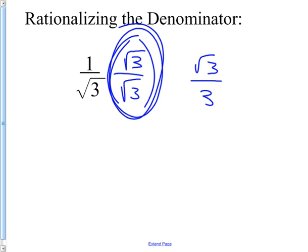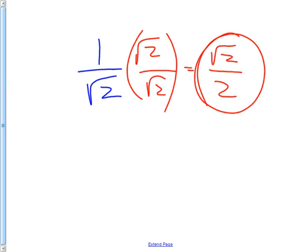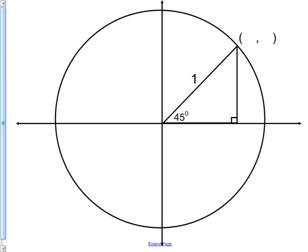I'd like you to try rationalizing this one. You're going to see it a lot in pre-calc. It's on one of the big tests that we just took today. So then this becomes root 2, root 2. Root 2 over 2. That's called rationalizing a denominator.